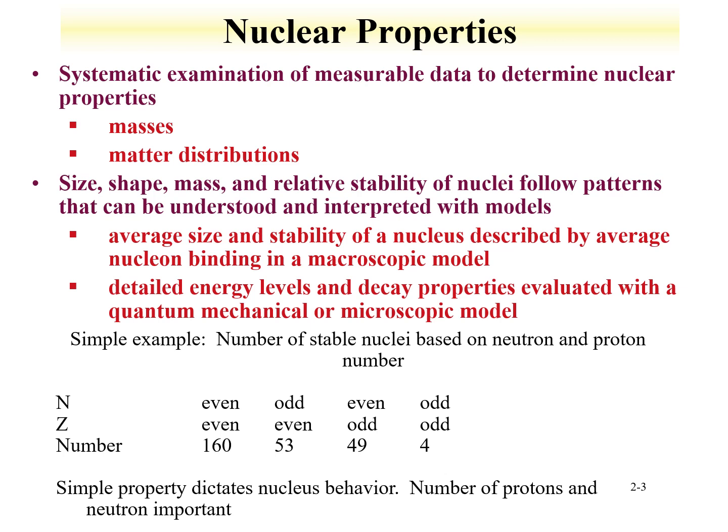Once you have these patterns and understand them, one develops models so that these trends can be described. That's a classic method used in nuclear physics—we'll describe how that pattern is used not only for fundamental nuclear properties, but in methods where one evaluates decay of nuclei. An average size and stability of a nucleus can be described by an average nucleon binding in a macroscopic model. Detailed energy levels and decay properties can then be evaluated with quantum mechanics, a microscopic model. An important example of trends can be observed just by looking at stable nuclei and the number of neutrons and protons in them.